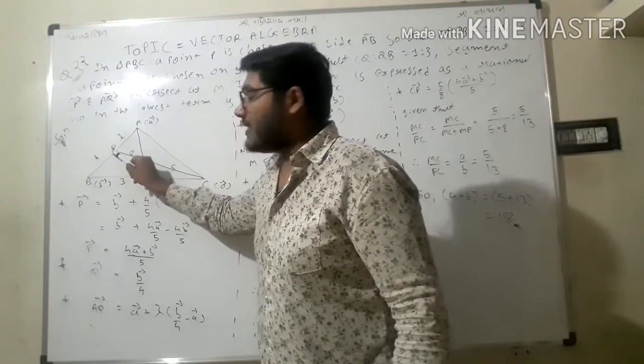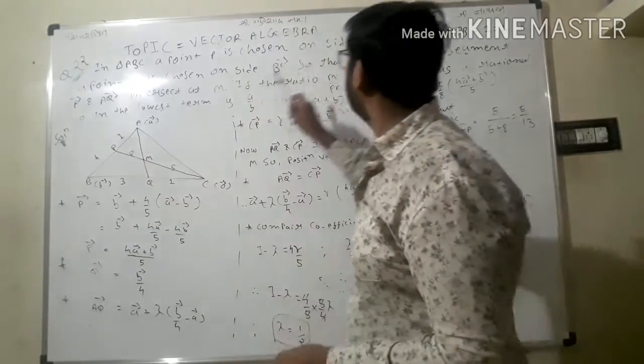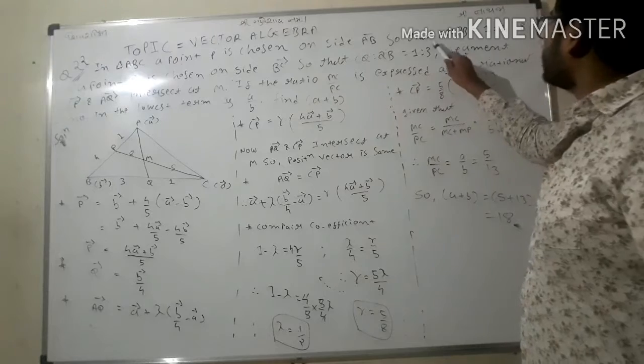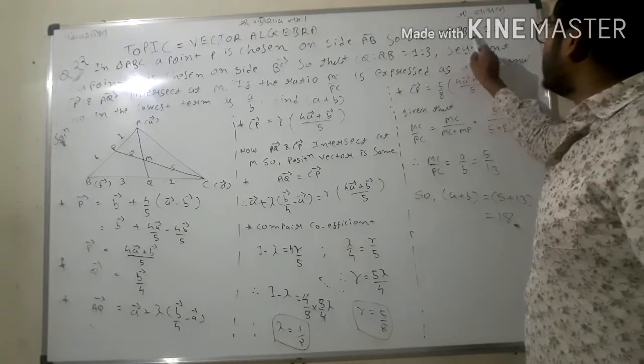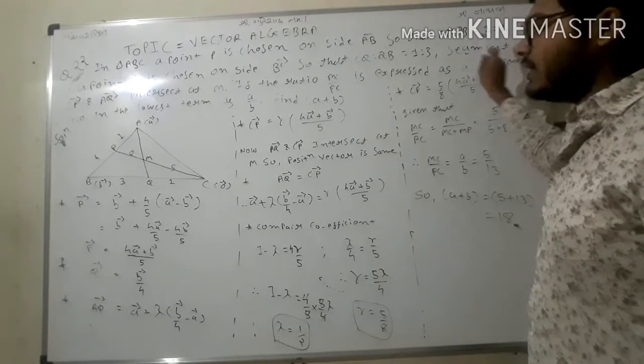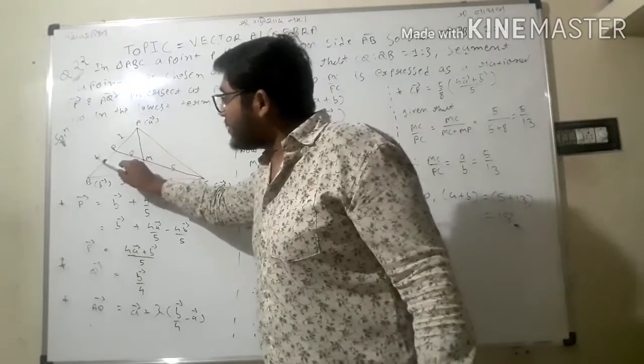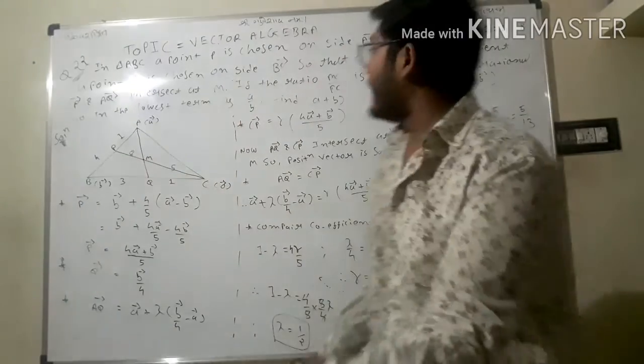On AB side we choose a point P so that AP:PB equals 1:4.